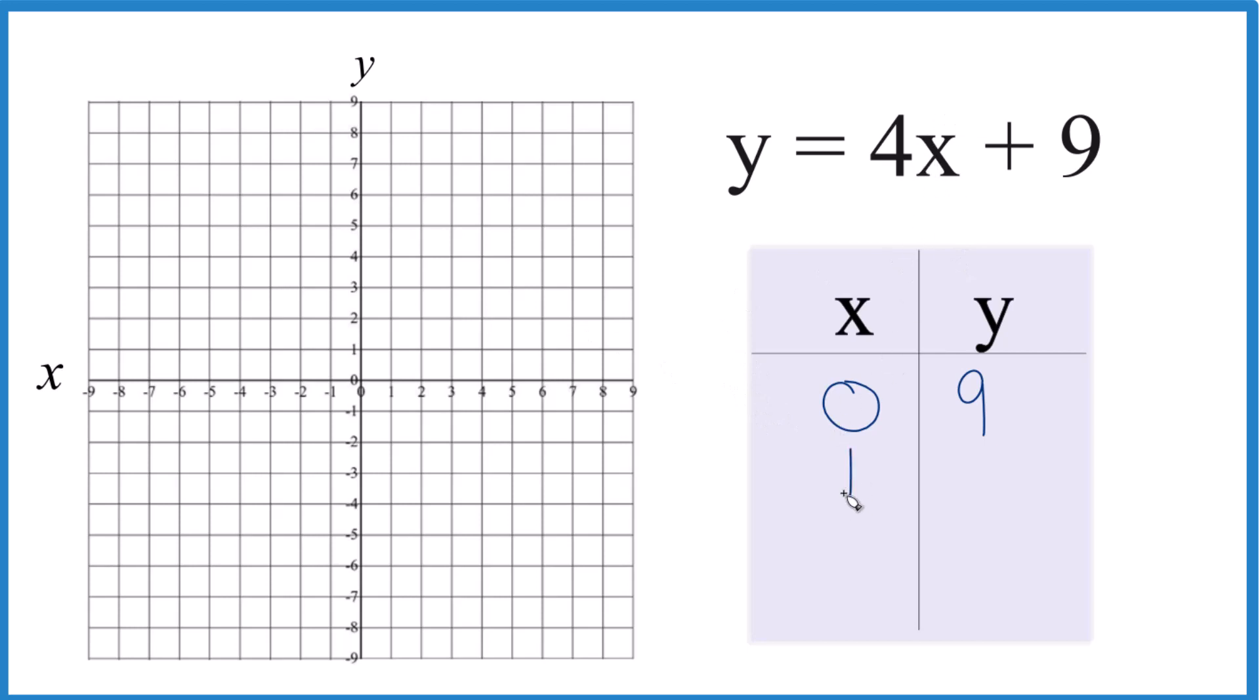If we put 1 in for x, 4 times 1, that's 4 plus 9, that would give us 13 for y. That would be off the graph. So let's do negative 1. 4 times negative 1, that's negative 4. Negative 4 plus 9 just gives us 5.